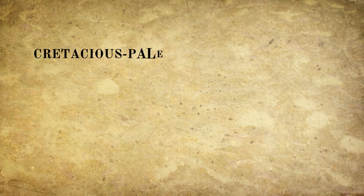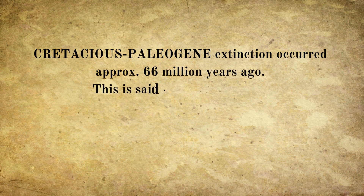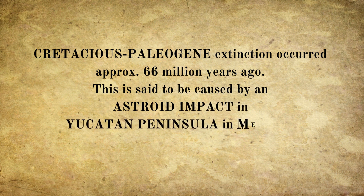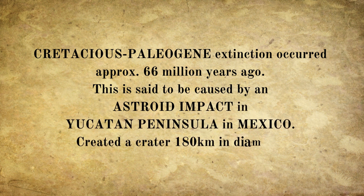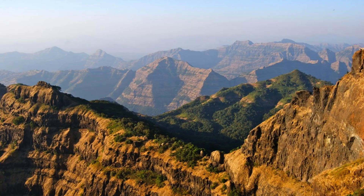The Cretaceous-Paleogene Extinction, or K-PG Extinction, occurred approximately 66 million years ago. This event is said to have been caused by an asteroid impact in the Yucatan Peninsula in Mexico, which created a crater 180 km in diameter. The impact released an immense amount of energy, causing shockwaves, global wildfires, a mega-tsunami, and ejecta that created a layer of debris globally, leading to an impact winter due to dust and debris blocking out sunlight. The Deccan Traps volcanic eruptions in India, occurring over several thousand years, may also have played a role.